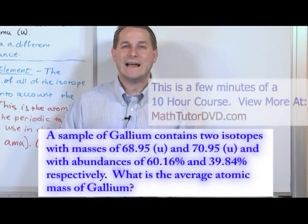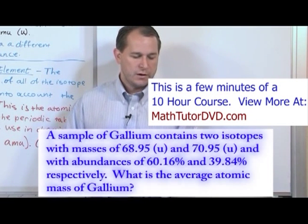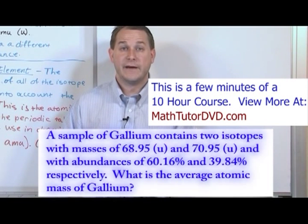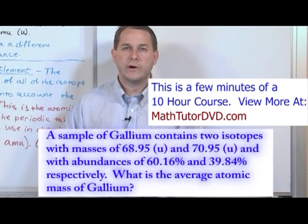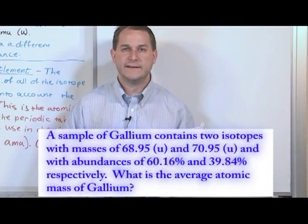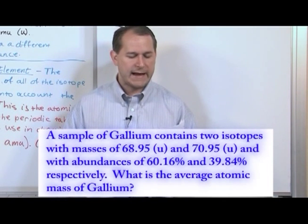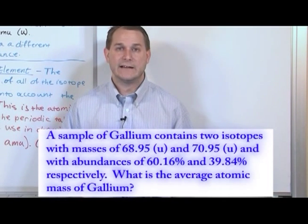A sample of gallium, the element gallium, contains two isotopes with masses of 68.95 AMU and 70.95 AMU with abundances of 60.16% and 39.84% respectively. What is the average atomic mass of gallium?